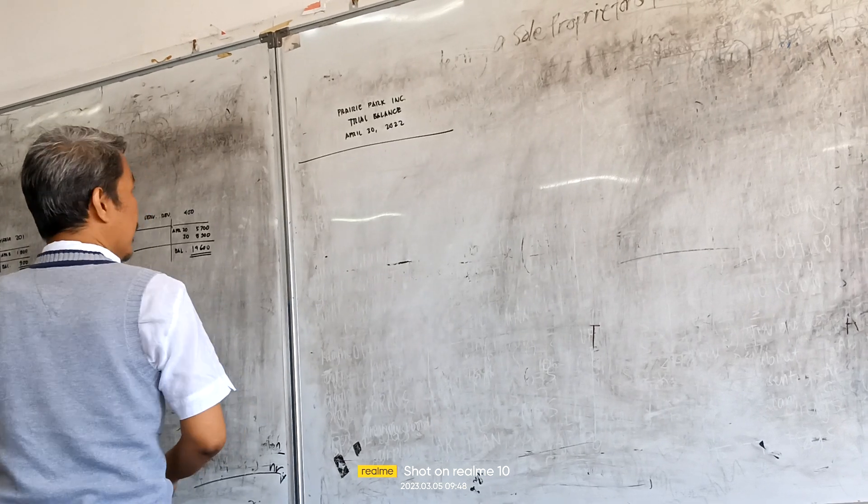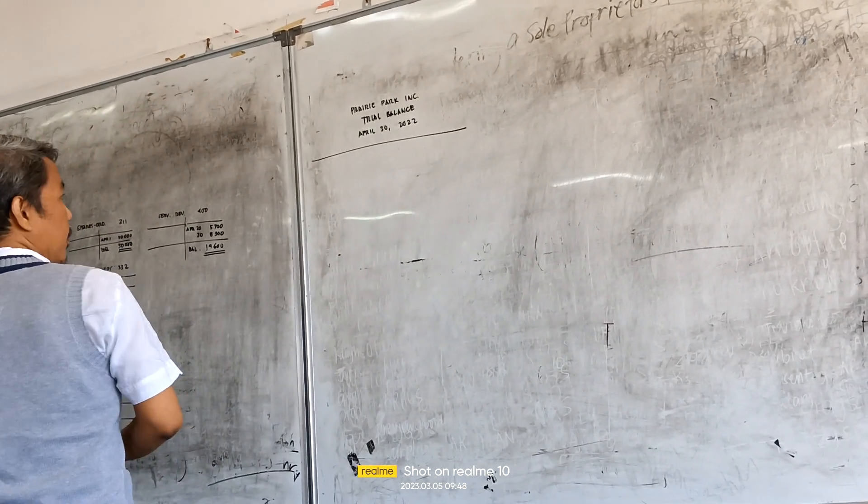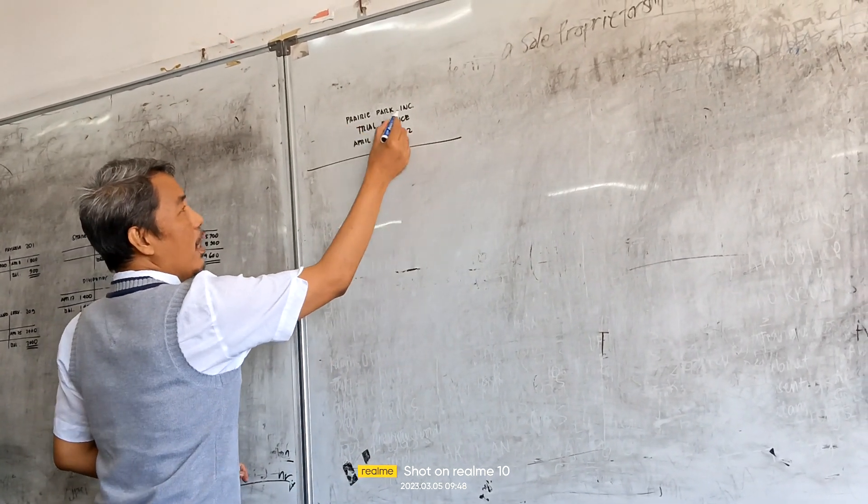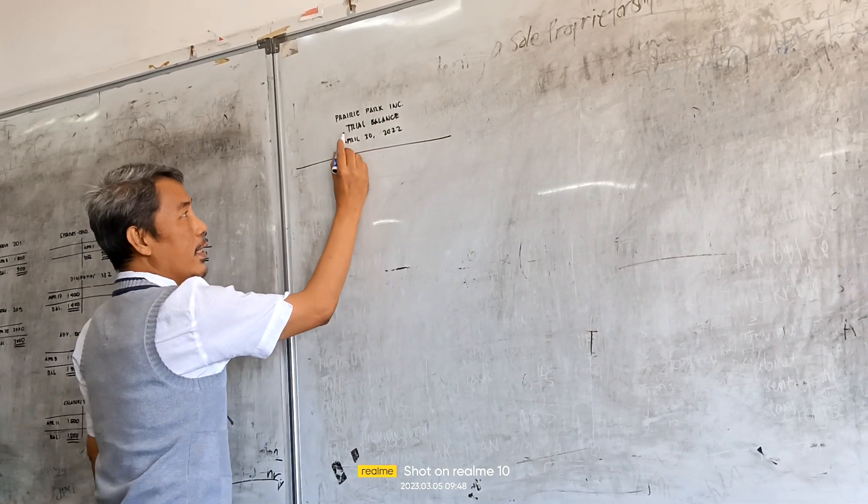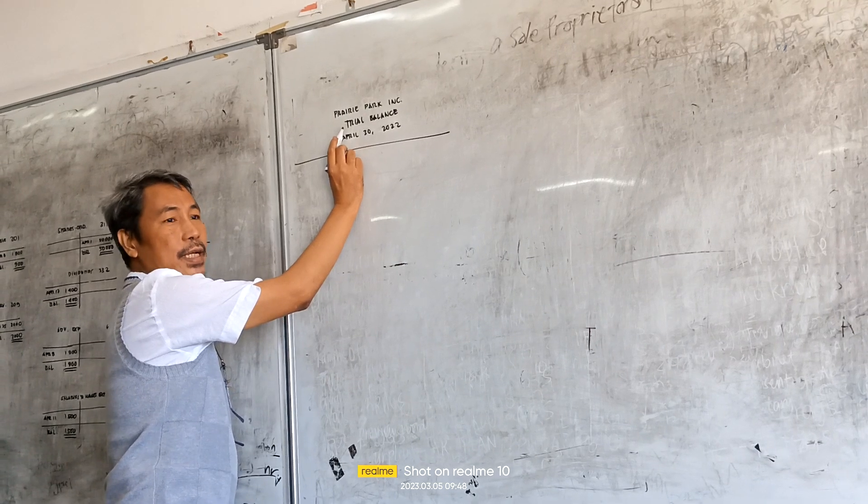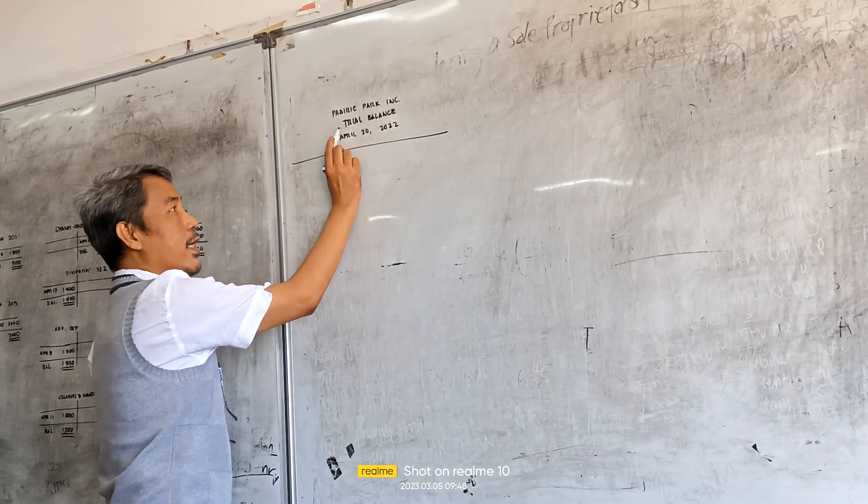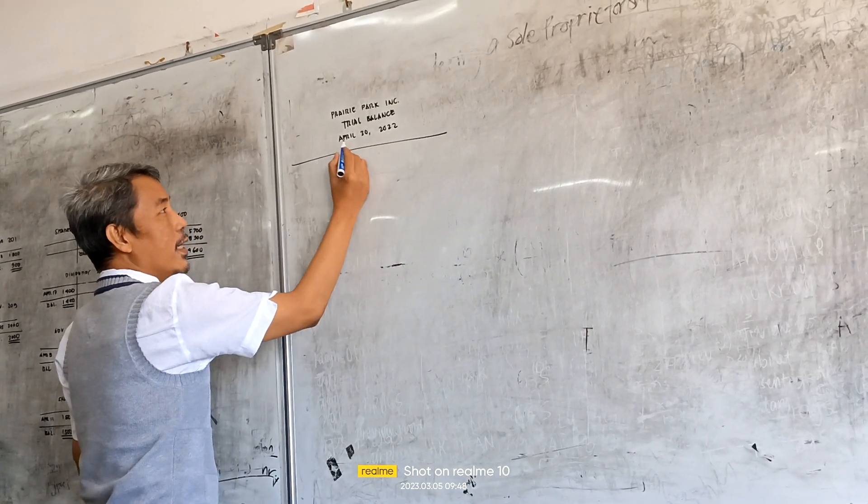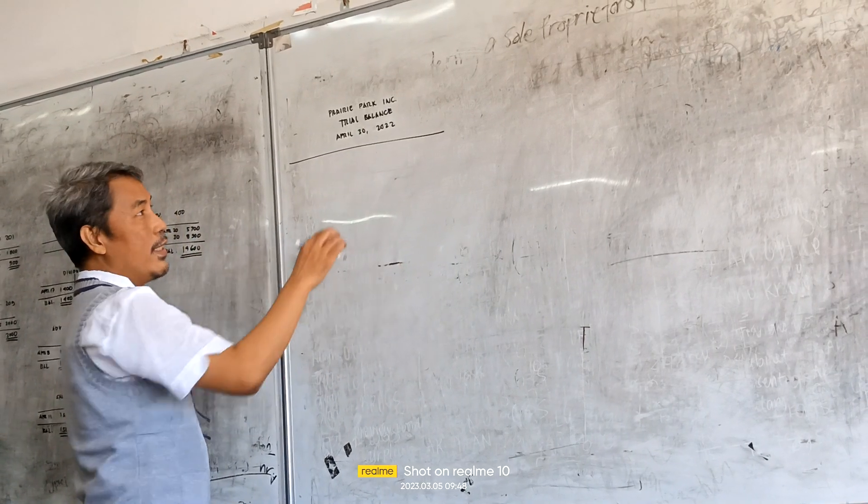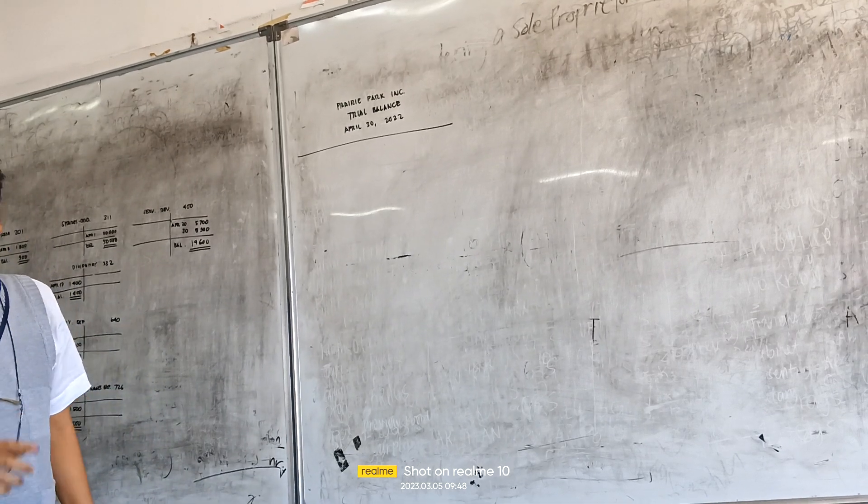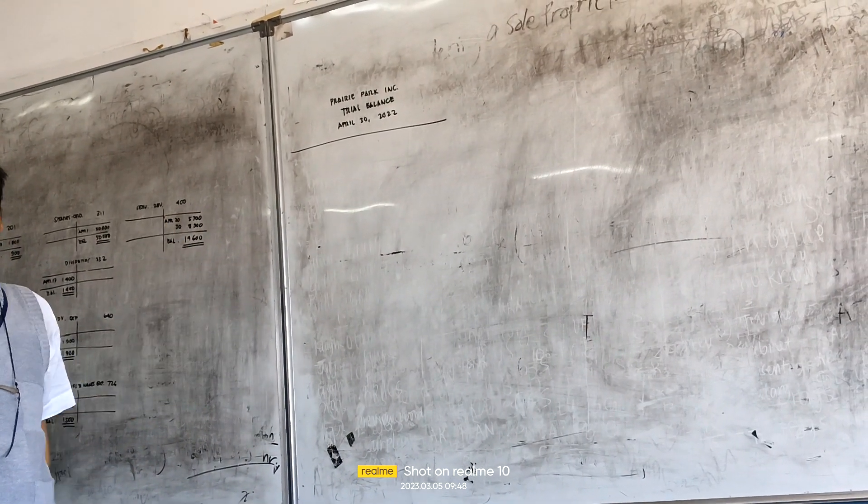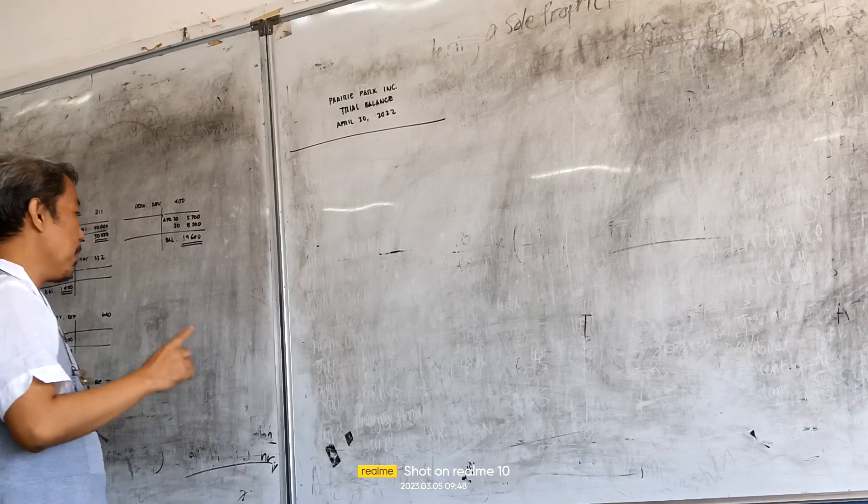Let us first present. Write down the name of the company, then the name of the financial statement, that is called trial balance. Then the date. The date is usually the last date of the accounting cycle. The accounting cycle, if the date is 14, the last date is 30.